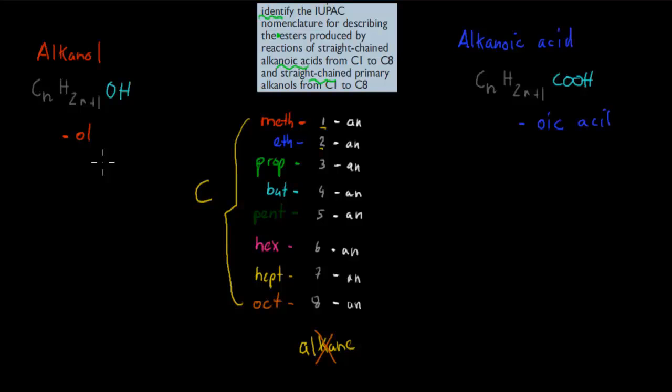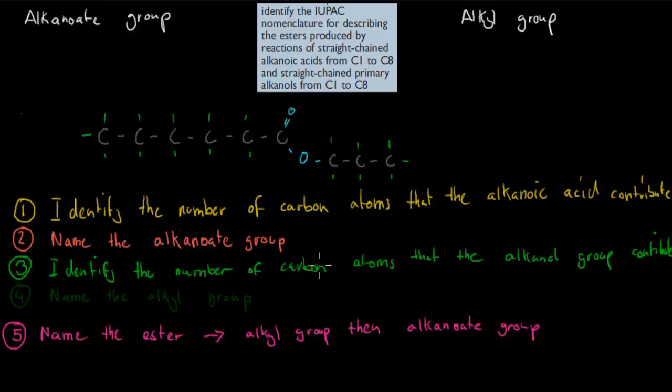But so far, we haven't answered that dot point yet, because it's talking about what happens when those combine, when an alkanol combines with an alkanoic acid to form an ester. How do we name it then? What do we change? So first of all, the actual name changes. Now, an alkanoate group is actually an alkanoic acid.